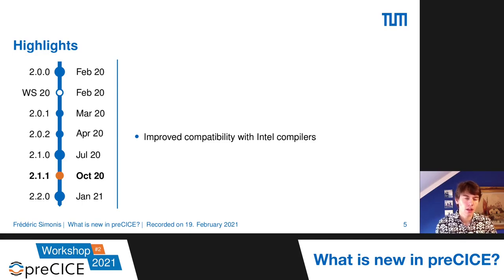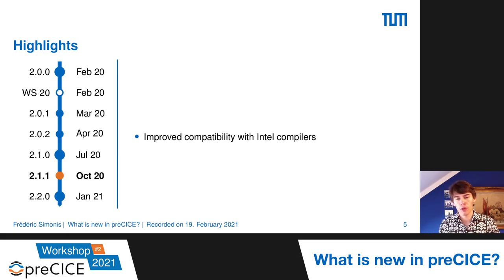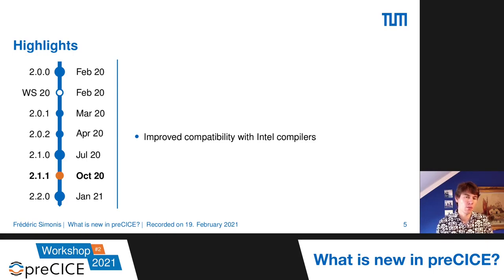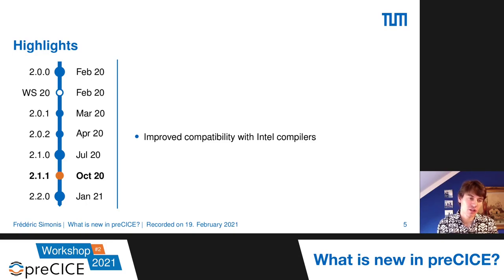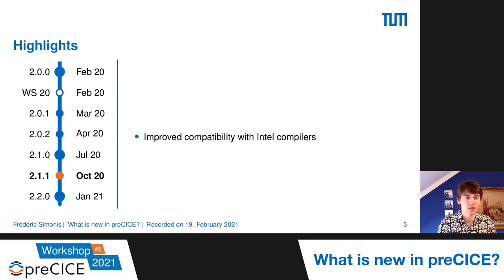In version 2.1.1, a user told us about Intel compiler problems, so we worked on fixes to improve compatibility. If you ran into such problems, you should at least upgrade to this version — though of course you should always upgrade to the latest version.